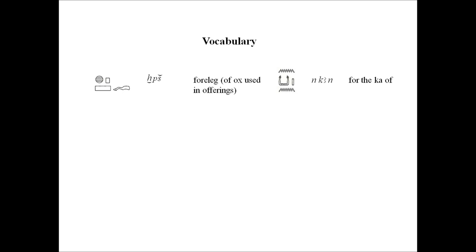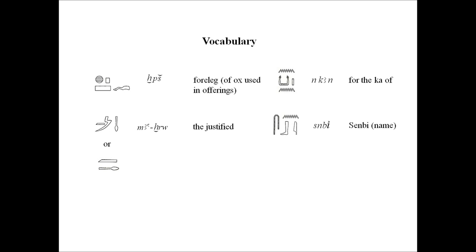The word ma'e h'ruh means the justified. This appears quite frequently. The word shown below it, indicated with or, is an alternative writing. Ma'e h'ruh is constantly used throughout inscriptions, on monuments, and in papyrus texts. To relate to ma'e h'ruh, we would use the modern-day equivalent of amen when completing a prayer. The next word, which you've seen before, is Senbi — a transliteration — which is actually a proper noun, the name of the official.